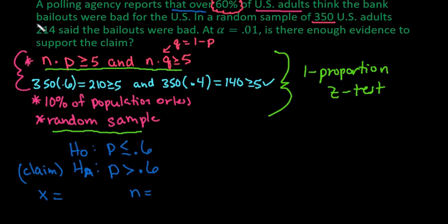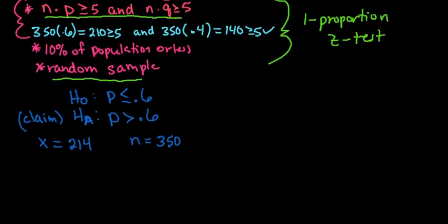X is the number of successes. So in this case, we had 214 successes. If they gave it to you as a percentage of the sample that said this way, you would multiply the percentage times the sample size and then always round up to the nearest whole person. So for the calculator, this is what you need to use.